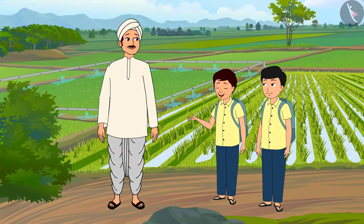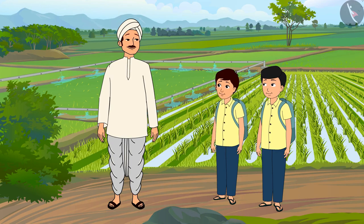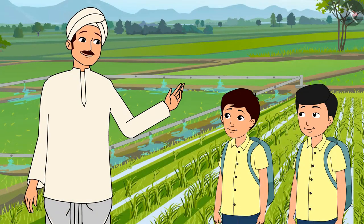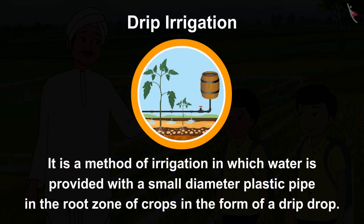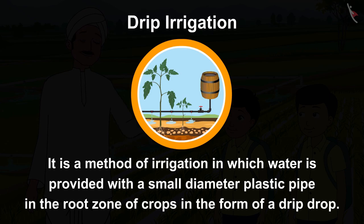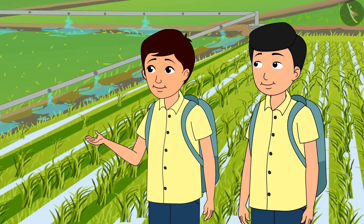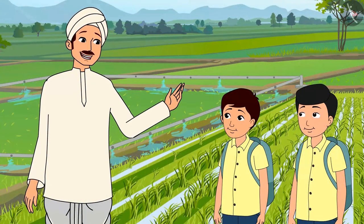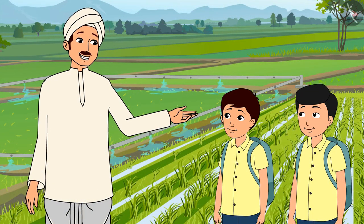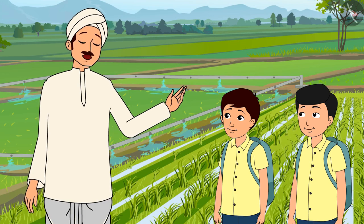Hello uncle, we wanted to ask you about the system through which water is going to the crops. Hello kids, this is called drip irrigation. It is a method of irrigation in which water is provided through a small-diameter plastic pipe directly to the root zone of crops in the form of drips. This system uses less water while crops get more water, and it also saves water overall.